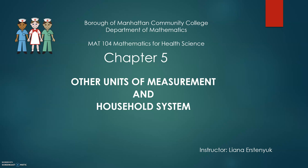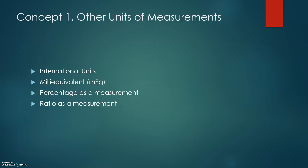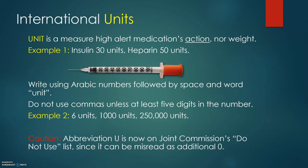Chapter 5: Other Units of Measurements and Household System. In concept number 1, we will go over the units of measurements such as international units, milliequivalents, percentages, and ratios.